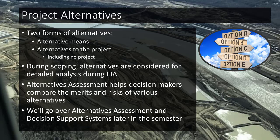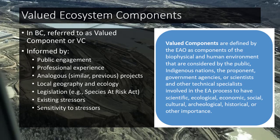During scoping, alternatives are considered for detailed analysis, and it's really just about listing what alternatives will be assessed. An alternatives assessment helps the decision maker compare the pros and cons of the proposed project against a range of other options — not just cost-benefit of a single project. We'll cover this in much more detail later.